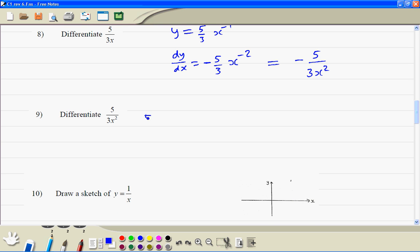Again, here, we have to rewrite this. Says y equal to 5 thirds, x to the power minus 2.